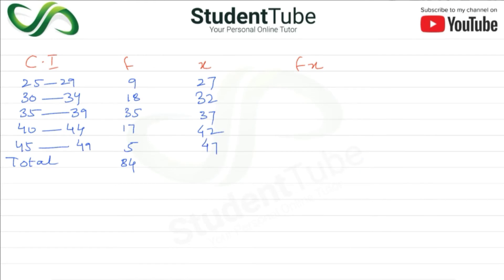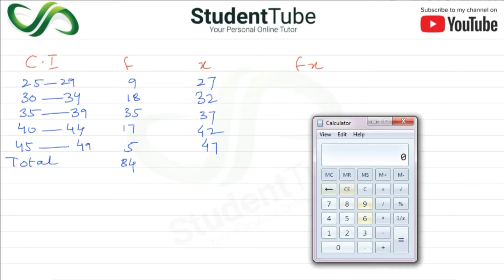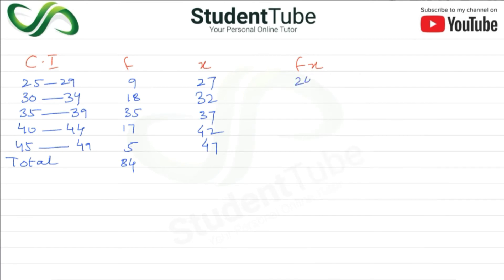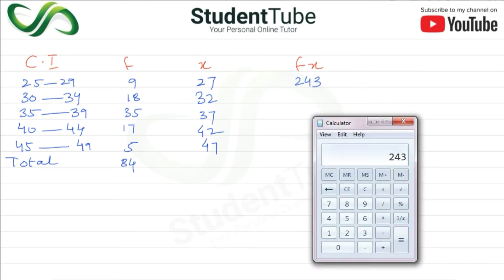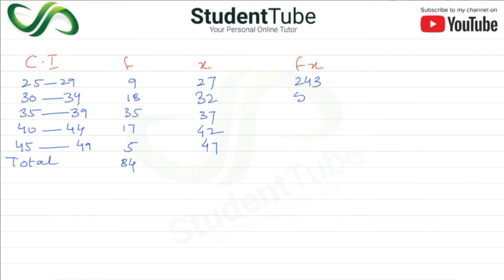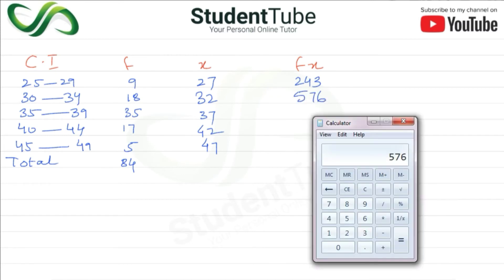Now we multiply f and x. These are separate columns and we multiply them together. 27 × 9 = 243. Then 18 × 32 = 576.